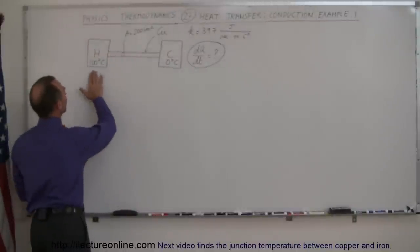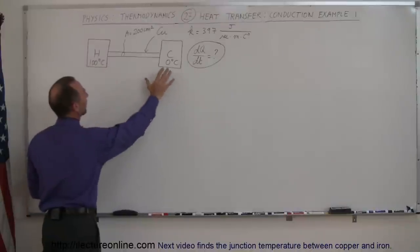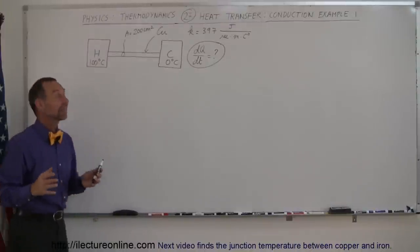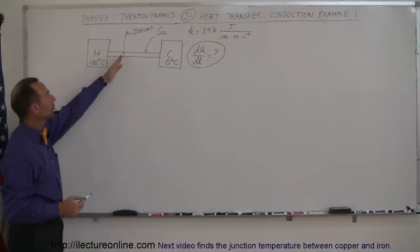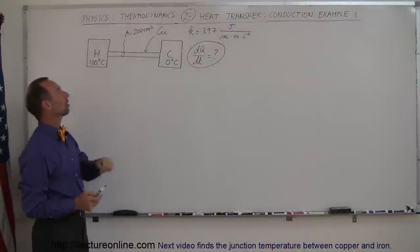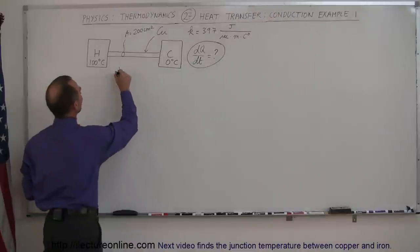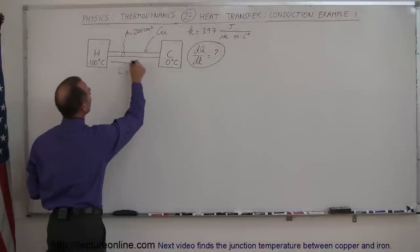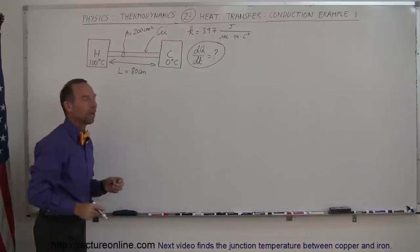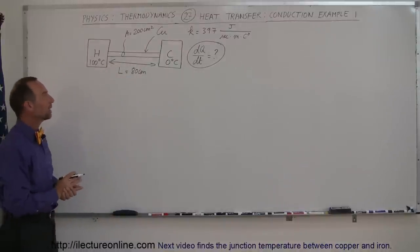We have what we would call a hot reservoir, hot object, and a cold object. They are physically connected with a path, a copper bar, that has a cross-sectional area of 200 square centimeters. Let's say that the length of this bar is 80 centimeters, so 0.8 meters, so that the distance between the hot and the cold object is 80 centimeters.